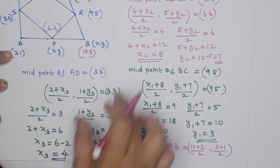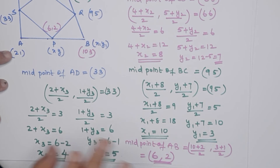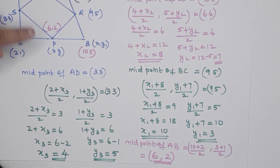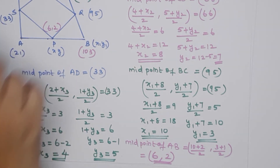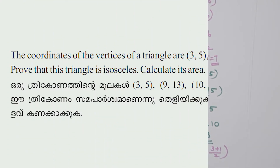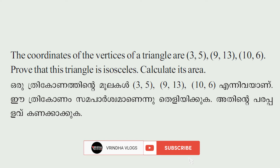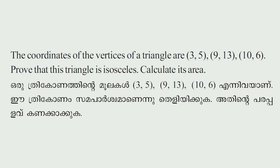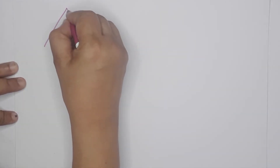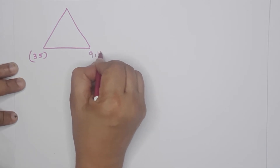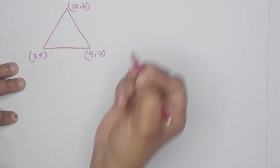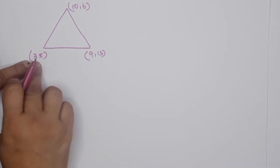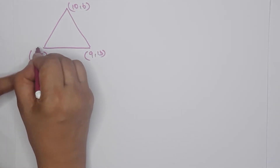Next question: The coordinates of the vertices of a triangle are (3, 5), (9, 13), and (10, 6). Prove that this triangle is isosceles and calculate its area. We have a triangle with these three vertices.